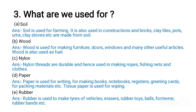B) Wood is also used for fuel. C) Nylon: Nylon threads are durable and hence used in making ropes, fishing nets, and cloth. D) Paper: Paper is used for writing, for making books, notebooks, registers, greeting cards, and for packing materials.